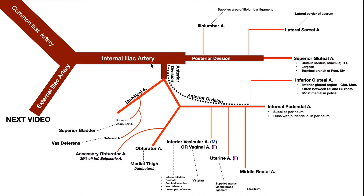The internal iliac artery really divides again into two major divisions. We have a posterior division, which we're going to cover first, and then an anterior division. The entire curve shown here really represents the anterior division.